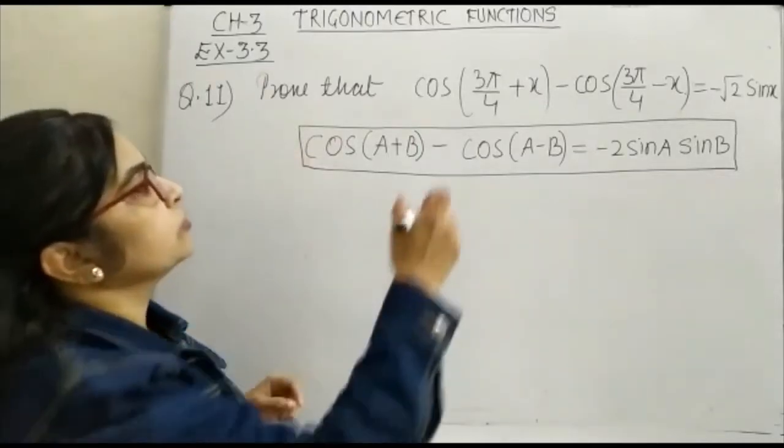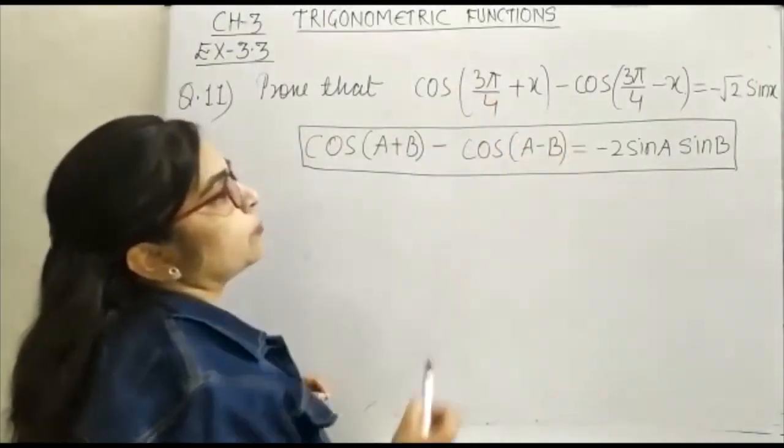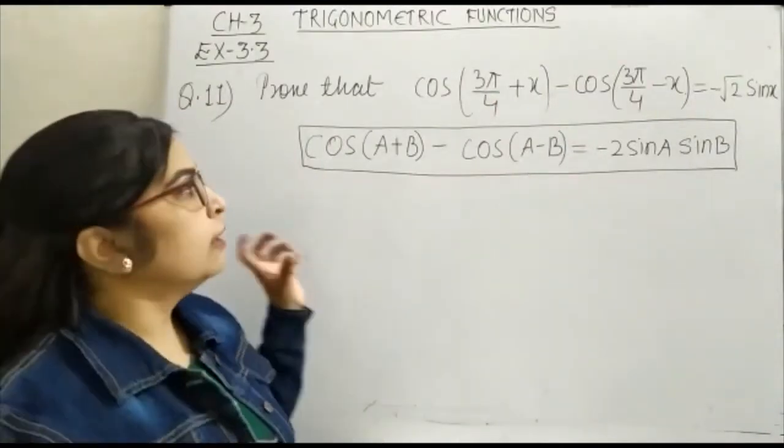To prove that cos(3π/4 + x) minus cos(3π/4 - x) is equal to minus √2 sin x.